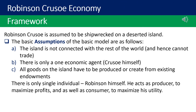The framework of the model is based on its assumptions. Robinson Crusoe is assumed to be shipwrecked on a deserted island. The island is not connected with the rest of the world and hence cannot trade. There is only one economic agent, Crusoe himself. All goods on the island have to be produced or created from existing endowments. He acts as producer to maximize profits as well as consumer to maximize his utility.